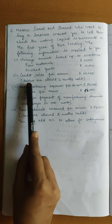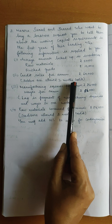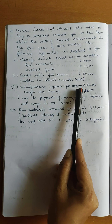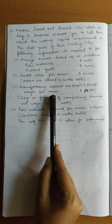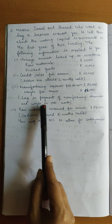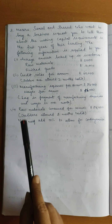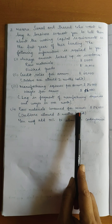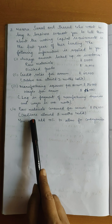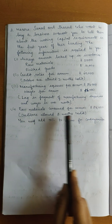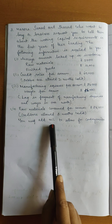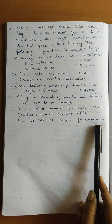Next, credit sales are given — debtors pay within a 2-month credit period. Next, manufacturing expenses and wages per annum are given, with one month outstanding lag in payment — they pay after one month delay. Next, raw materials consumed per annum 24,000, and the suppliers give 3 months credit for payment. Additionally, we add 10% for contingencies.